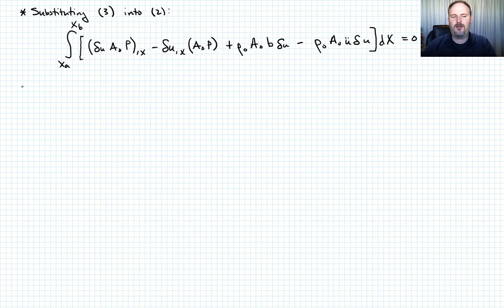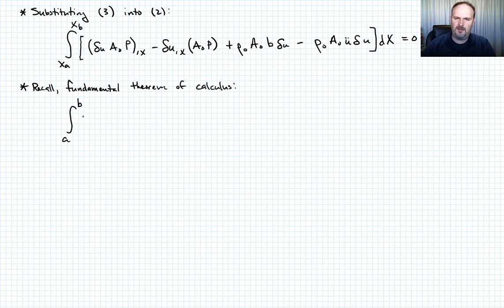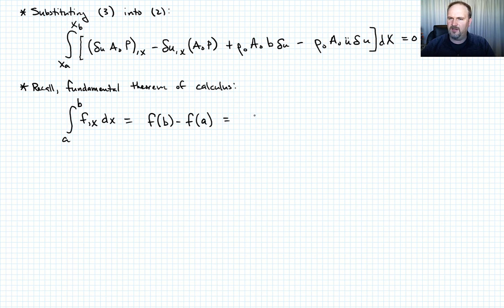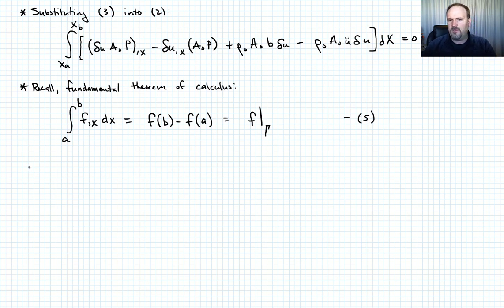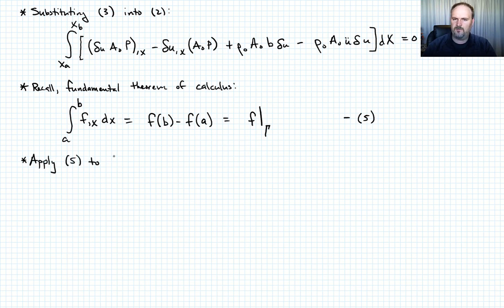Recall the fundamental theorem of calculus: the integral from a to b of df/dx dx equals f(b) − f(a), which we write as f evaluated at the boundary. Call that Equation 5. We want to apply this to the first term in the integral of Equation 4, which has the form of a derivative with respect to X.